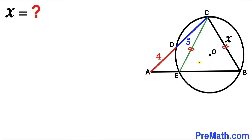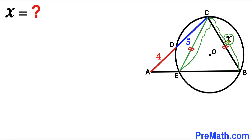In this video we have a big triangle ABC and a circle with center O, as shown in the diagram. Chord EC is equal to chord BC, and chord BC is represented by X units. Segment AD is 4 units, and segment CD is 5 units. Our task is to find the value of X.